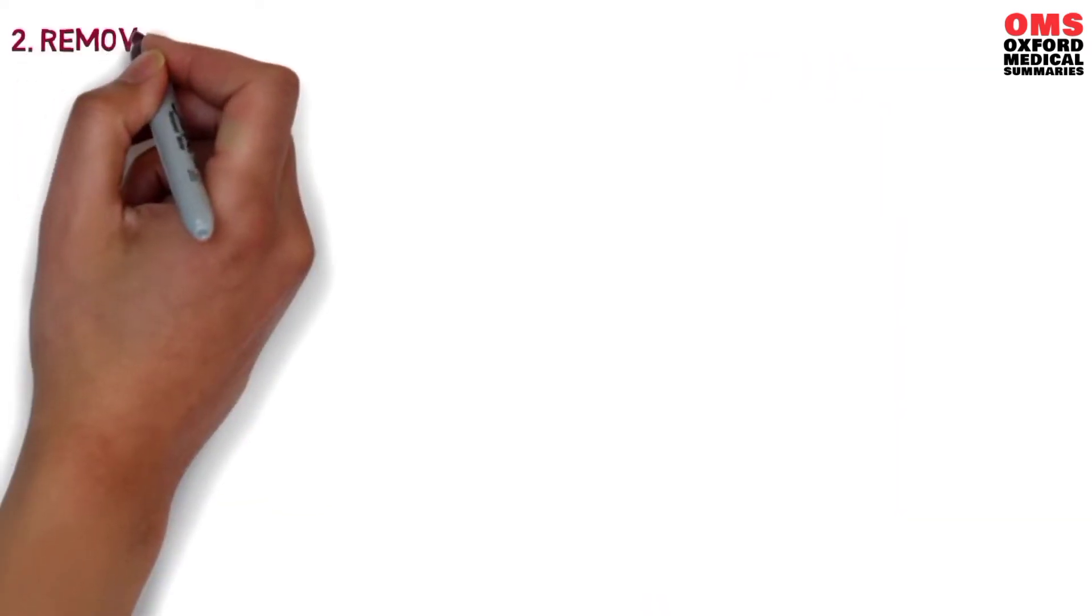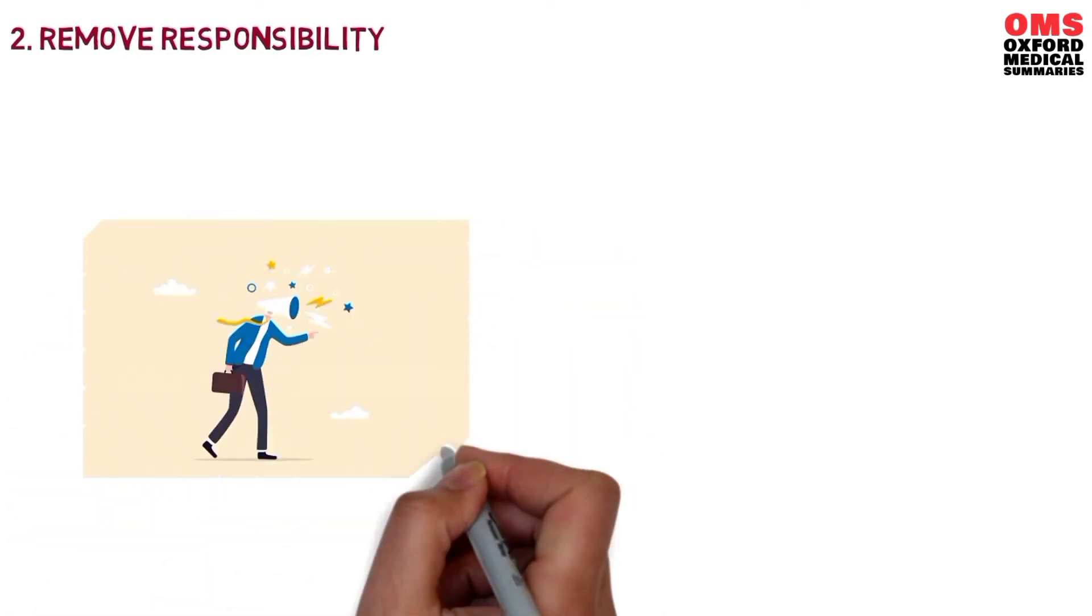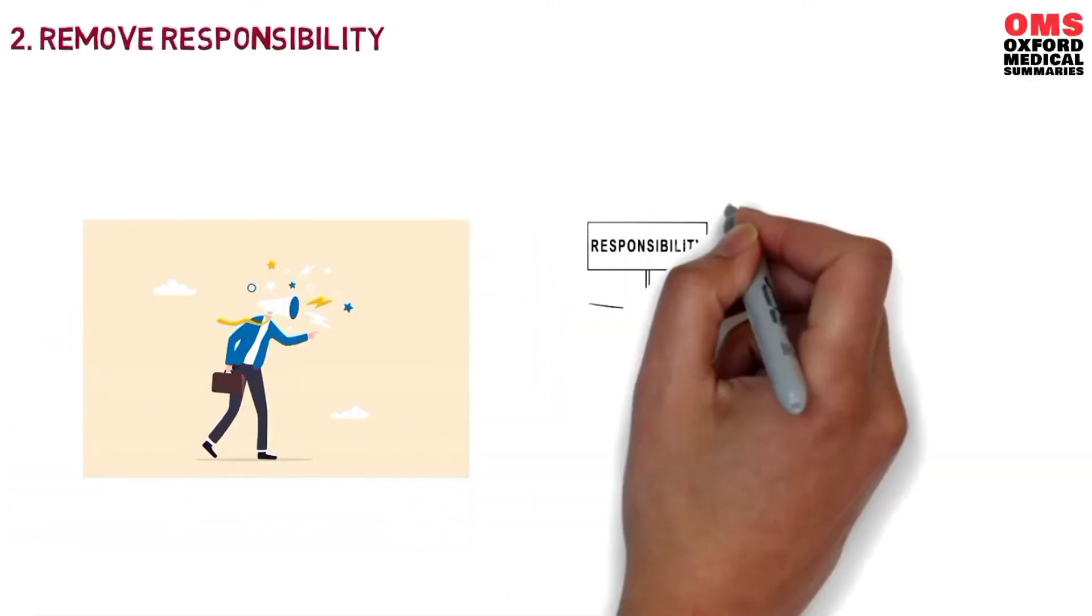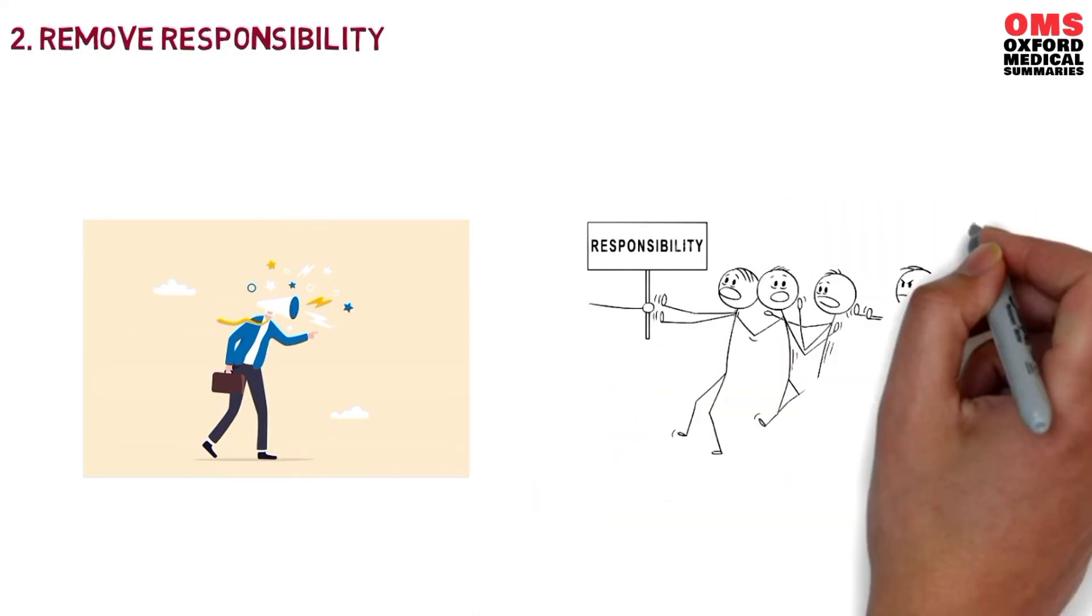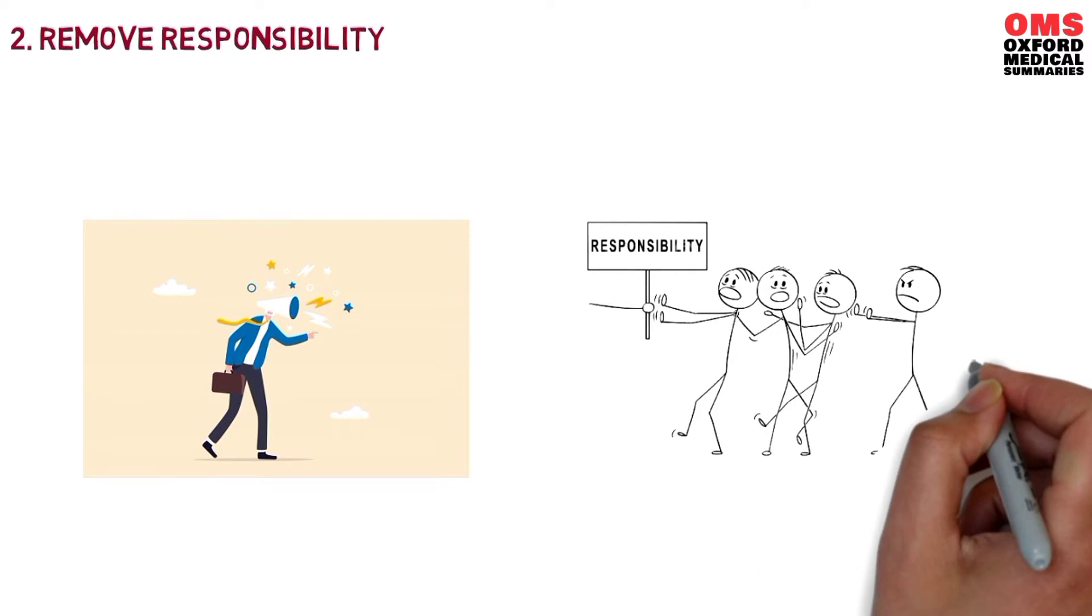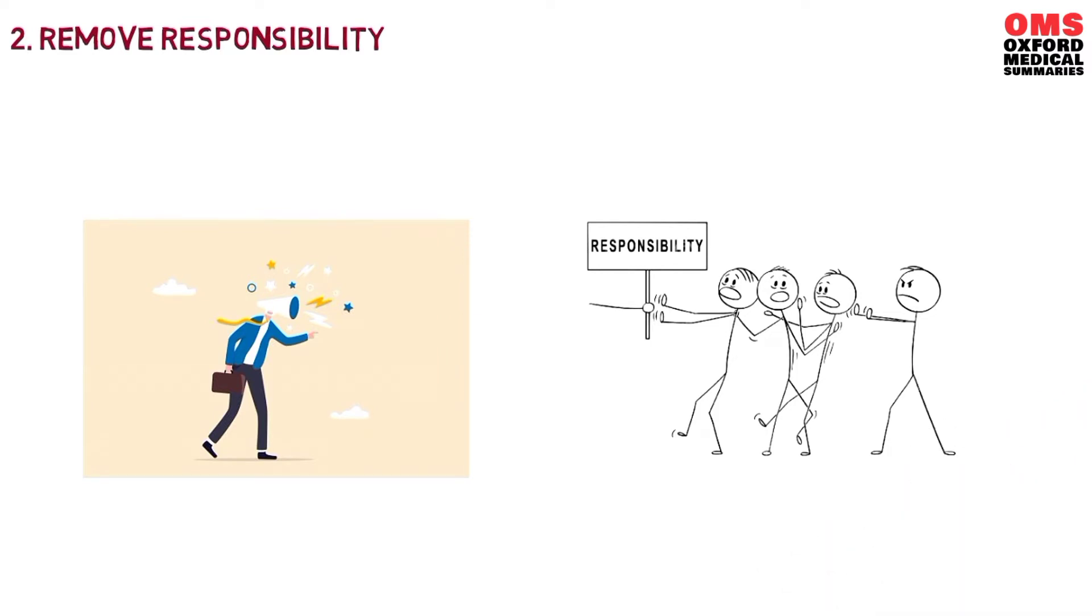Number two, remove responsibility. This type of complainer seeks to build a case for his or her inability to achieve by painting a hopeless picture as to the outcome. 'There's no use,' the complainer is saying, 'so I'm not going to try.' And this complainer is soliciting agreement from those who hear his or her complaints so as to validate their victimhood.